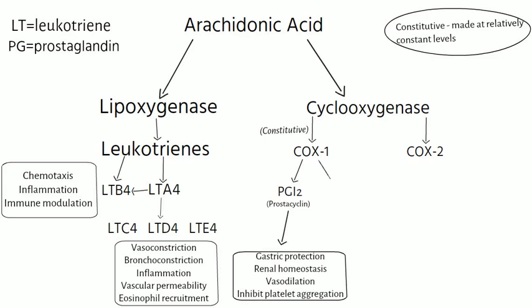Another product of the COX-1 pathway is TXA2, also known as thromboxane. Thromboxane promotes platelet aggregation and vasoconstriction.